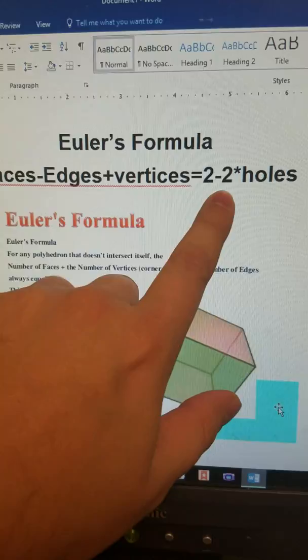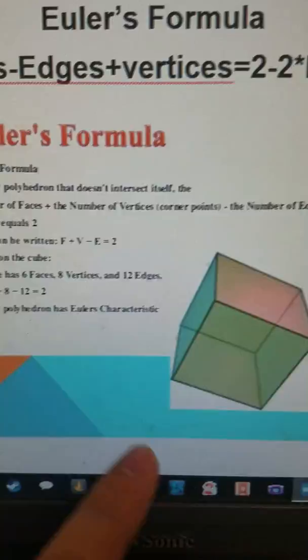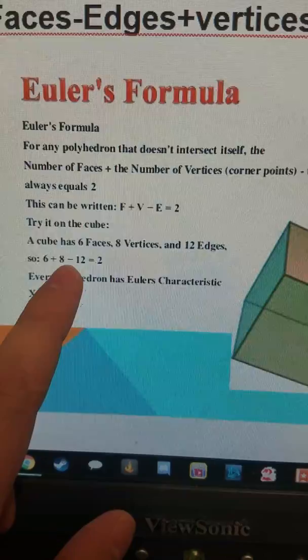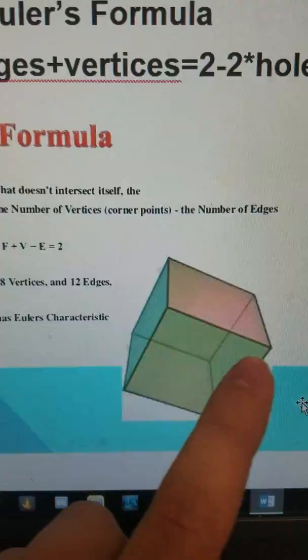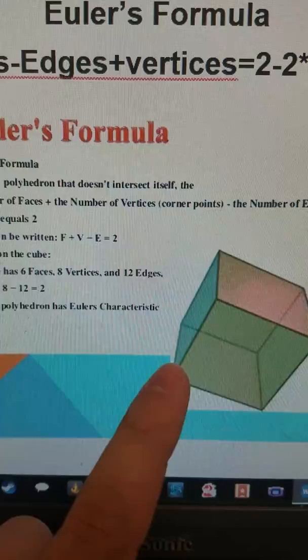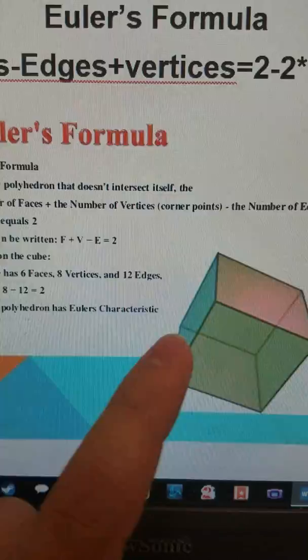So you can look, there are six faces of the cube with eight vertices, one, two, three, four, five, six, seven, eight, and twelve edges. And when you add them and subtract them together, you get two because there are no holes in the shape.